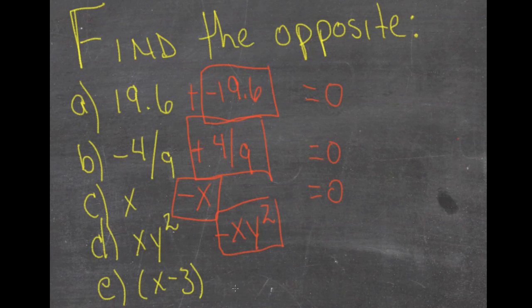And the opposite of x minus 3 is negative x minus 3.